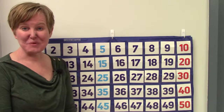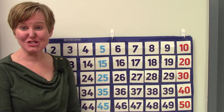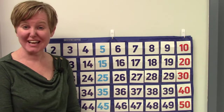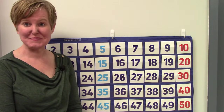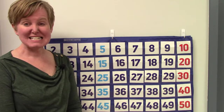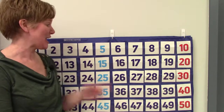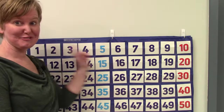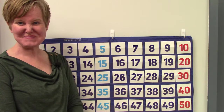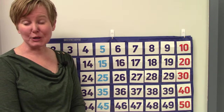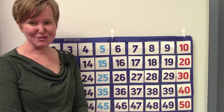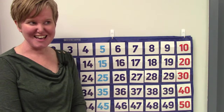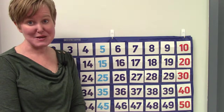Let's take a look. Class, we often use our hundreds chart when we're looking at numbers. It often helps us learn the order of them. Today we're going to be looking at them all the way from number 1 to 50, and we're going to be putting some of them in order. So we're going to take a closer look at some numbers.